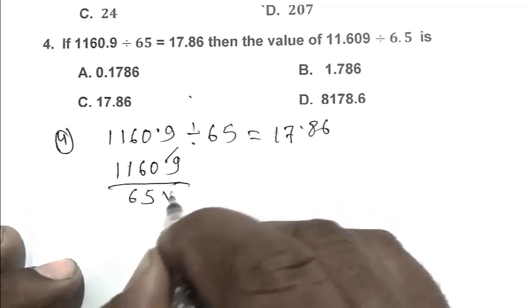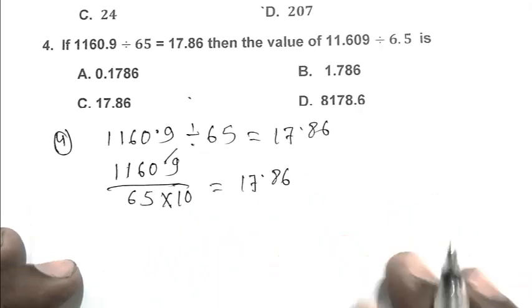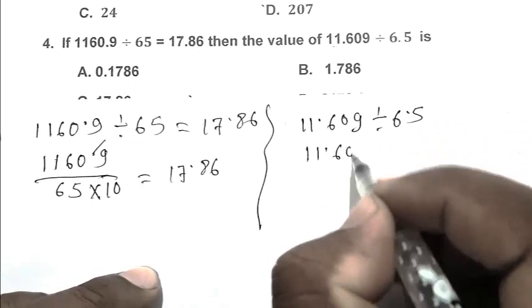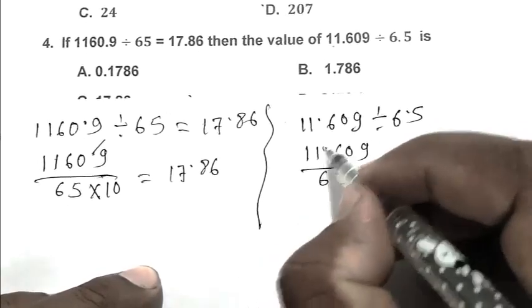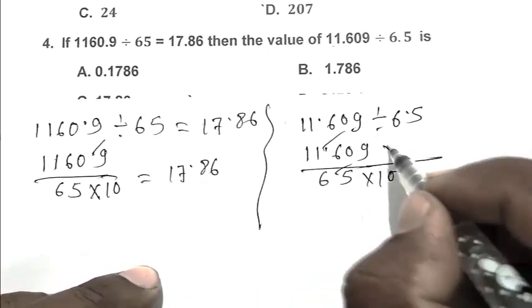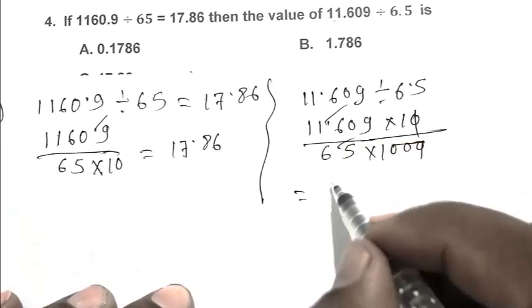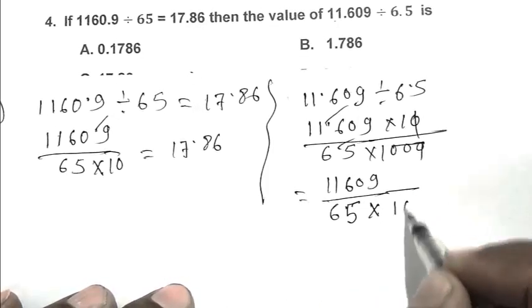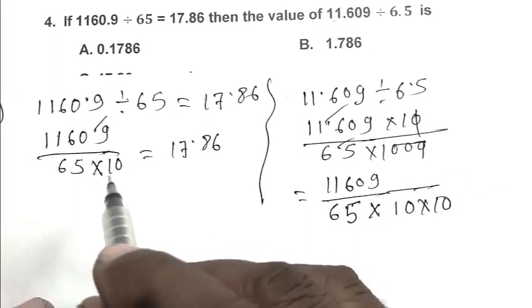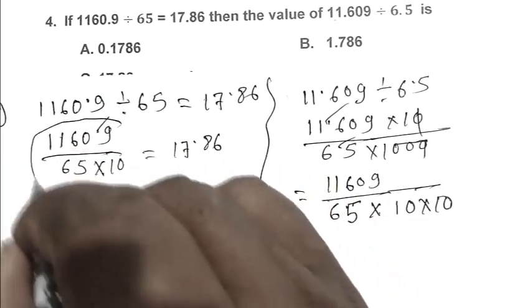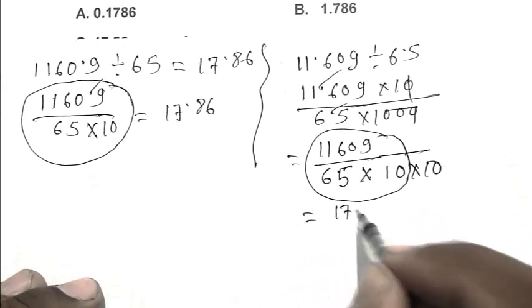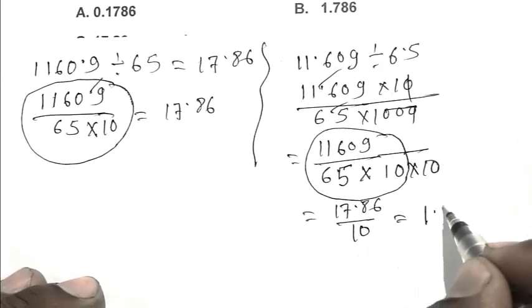11.609 divided by 6.5. Eliminating point we get the expression is 1160.9 by 65 multiplied by 10 into 10. So the value of this expression is 17.86. It's become 17.86 by 10, so 1.786. B is the right answer.